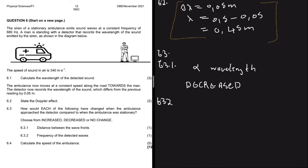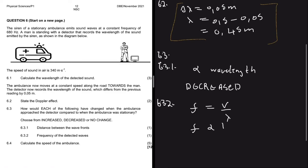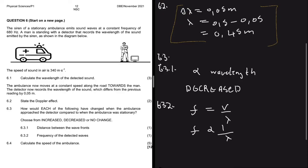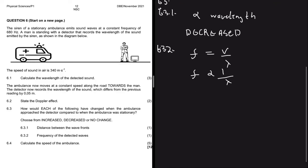For question 6.3.2 — how will the frequency of the detected waves change? Frequency equals speed divided by wavelength, so frequency is inversely proportional to wavelength. The wavelength went down, so the frequency goes up. The answer is: increased.